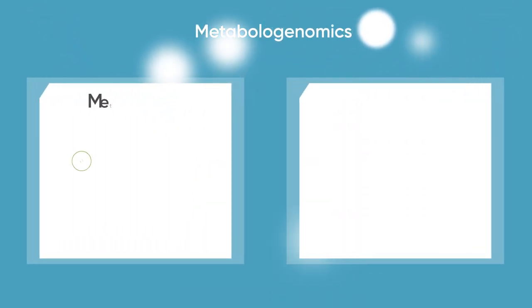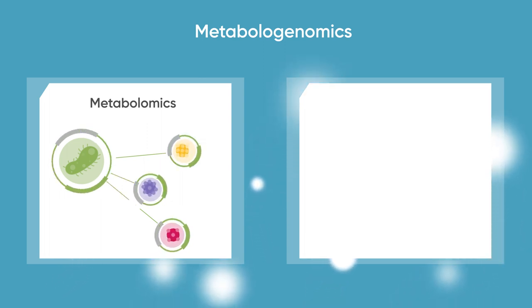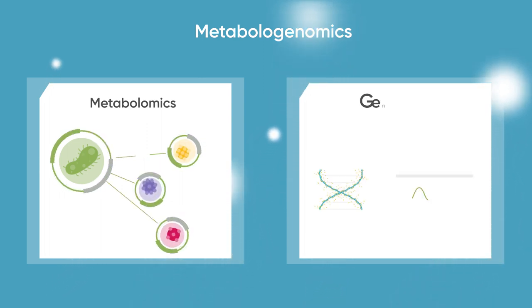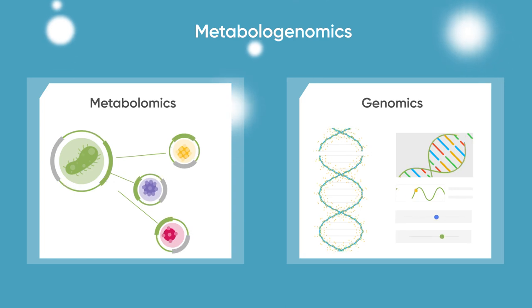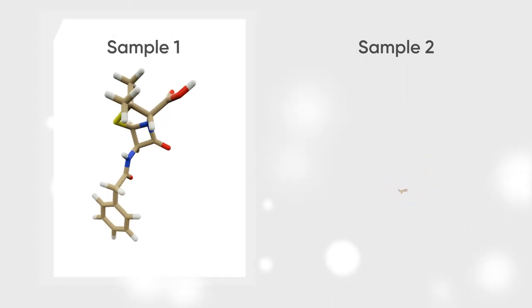Metabologenomics combines two fields. The first is metabolomics, where we study metabolites produced by bacteria. The second is genomics, sequencing bacterial genomes. We then use advanced analytics to determine which gene clusters produce which molecules.